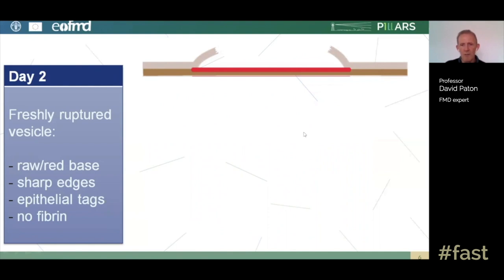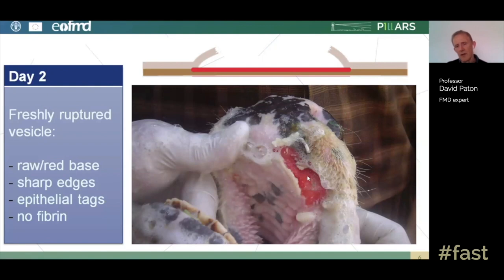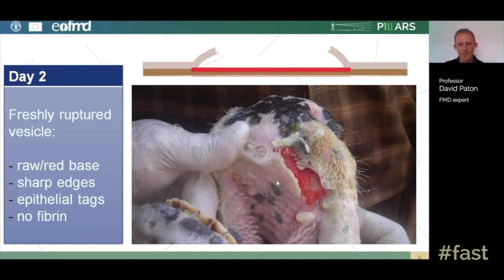Moving to day two, we have a freshly ruptured vesicle. The cartoon emphasizes that epithelial tags are still present at the edges even after some surface epithelium has been lost and fluid has been released, but at the base you have a very red, raw surface. Looking at the real thing on a cow's dental pad, you can see the very raw red base, the sharp edges, and loose flaps of epithelium that could easily be collected as samples. There is no fibrin deposition — this is a classic day two lesion.